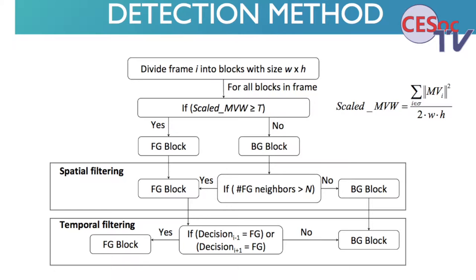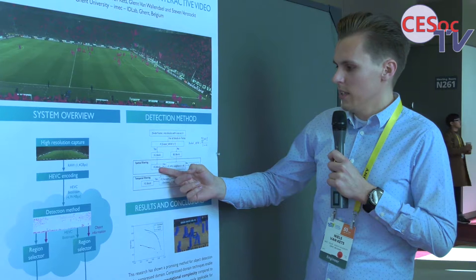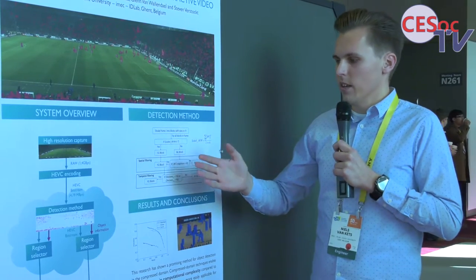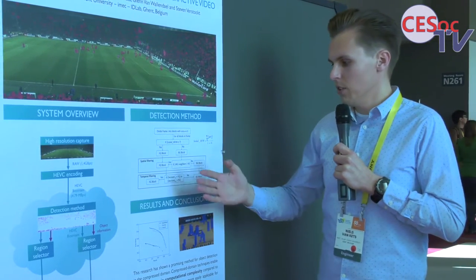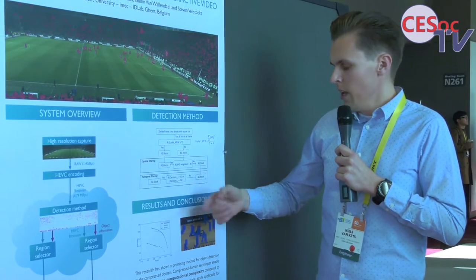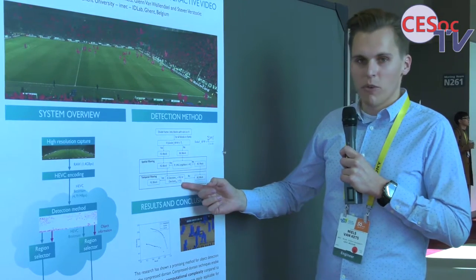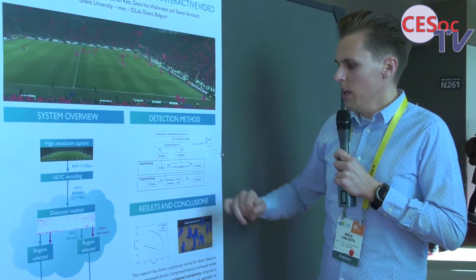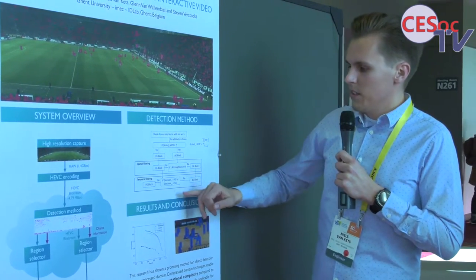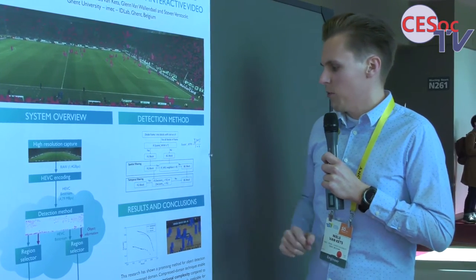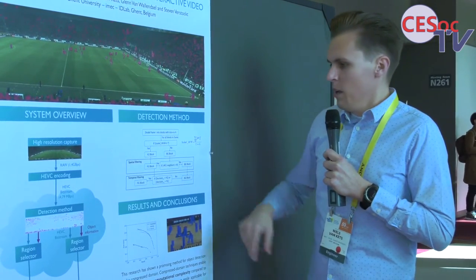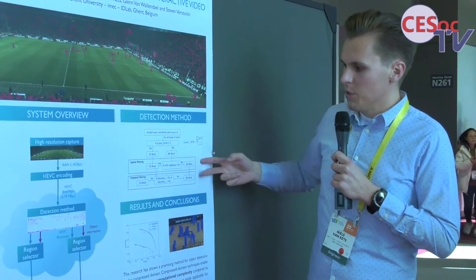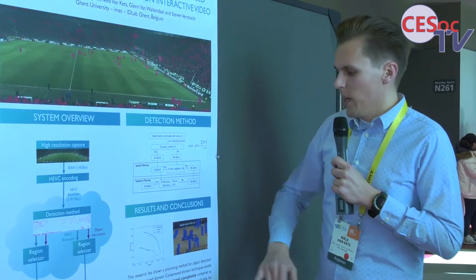If a foreground block is detected, temporal filtering will check the previous and the consecutive frames to see if those frames also contain a foreground block. If one of the adjacent frames was also a foreground block, it uses that to decide whether the current block is foreground or background.